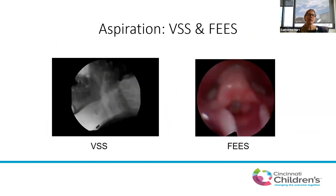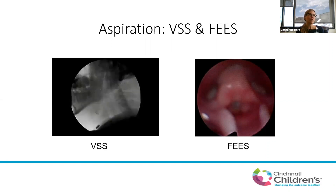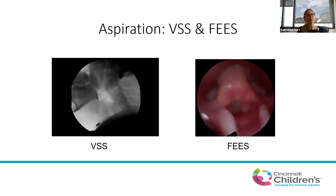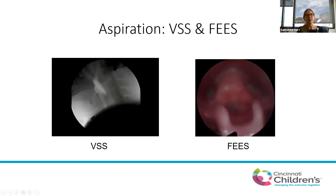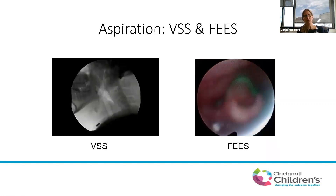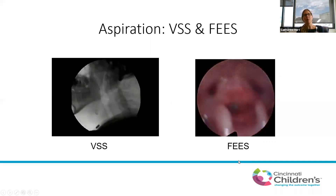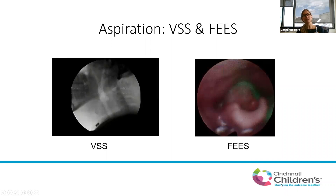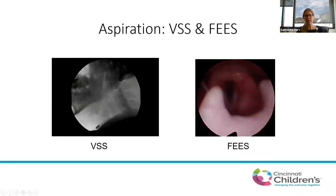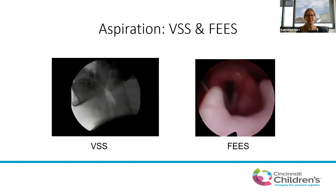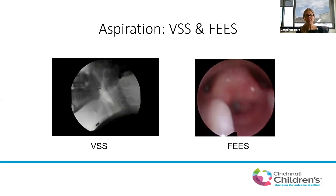Looking at these tests side by side: in the video swallow study, you watch the bolus transit through the back of the throat, and in this example, you see the bolus divide — part goes down the esophagus posteriorly, and a large amount goes down into the trachea, which is clearly where we'd prefer it not to go. In the FEES view, the camera is through the nose sitting in the hypopharynx. You can watch green food-colored material pass along and a little bit slip over the arytenoids down into the airway. One disadvantage of FEES is the momentary whiteout during the swallow that can make interpretation more difficult. These tests are often used complementarily.